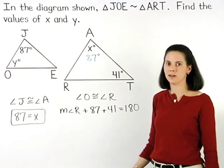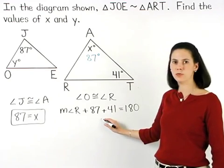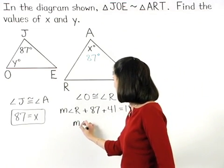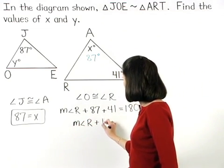Solving from here, 87 plus 41 is 128, so we have the measure of angle R plus 128.